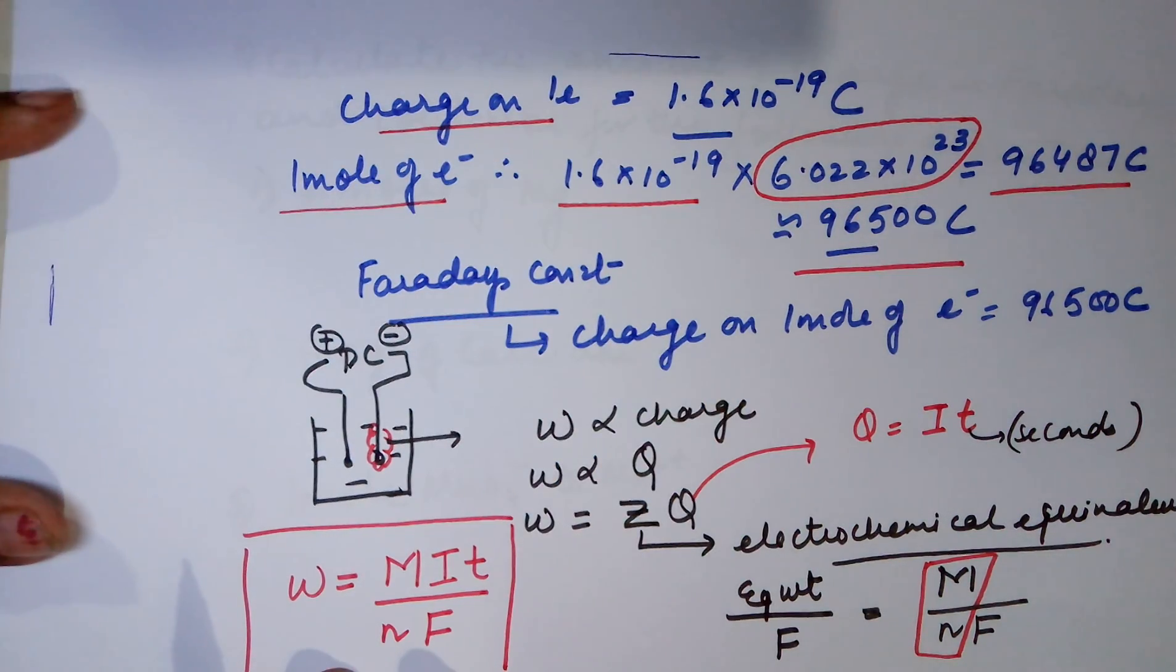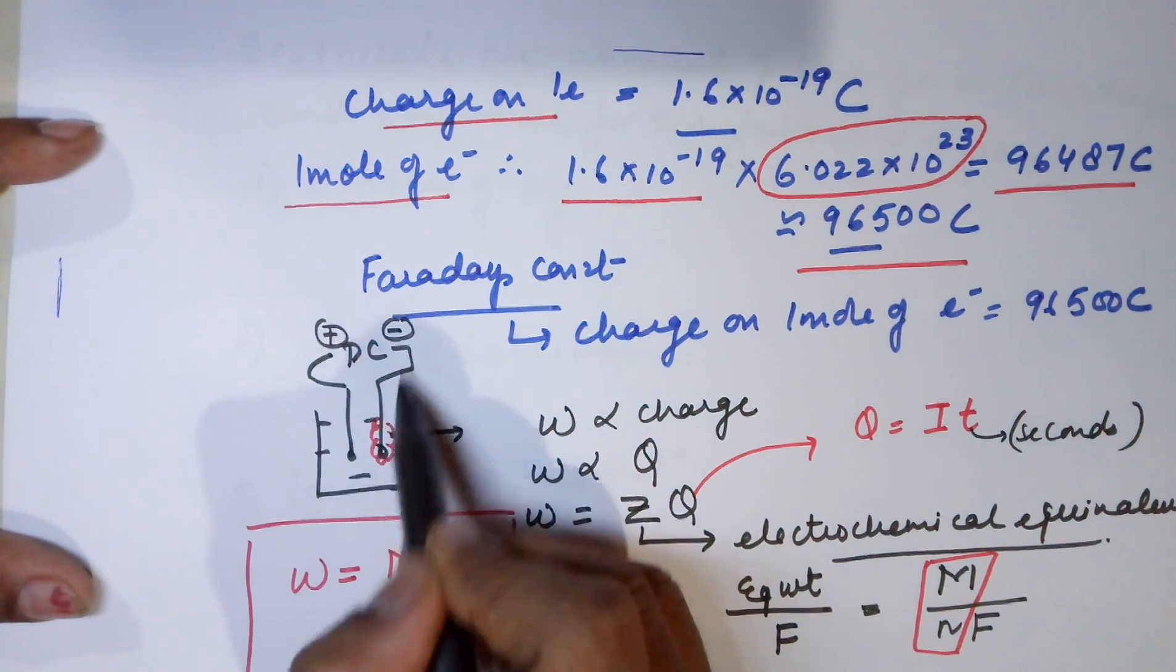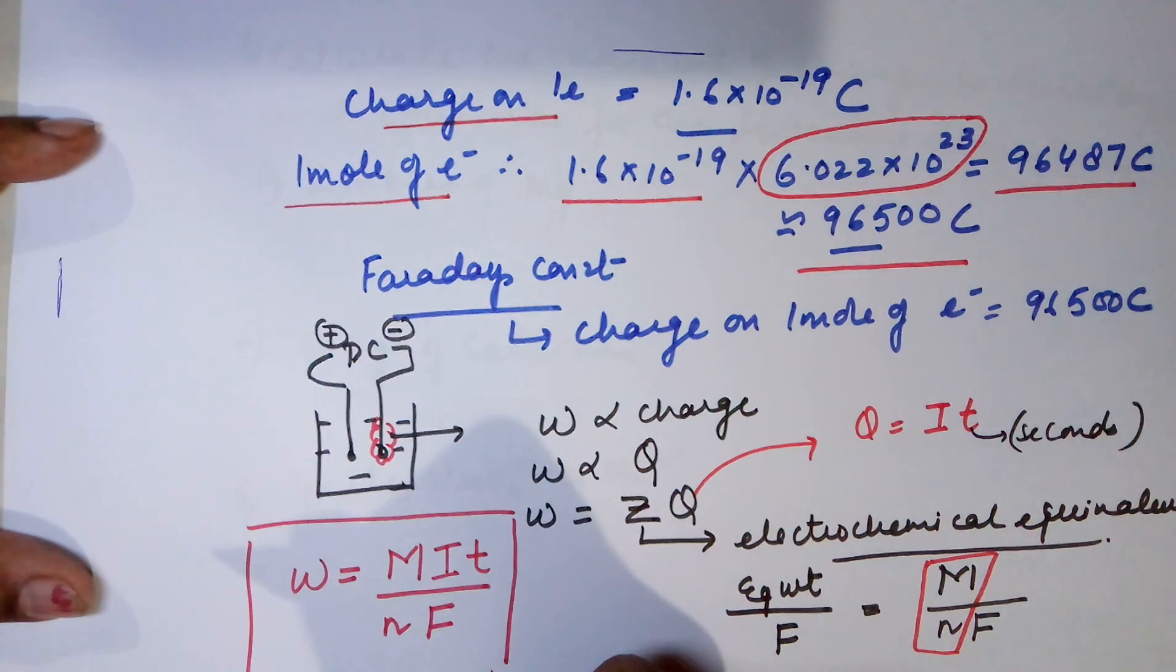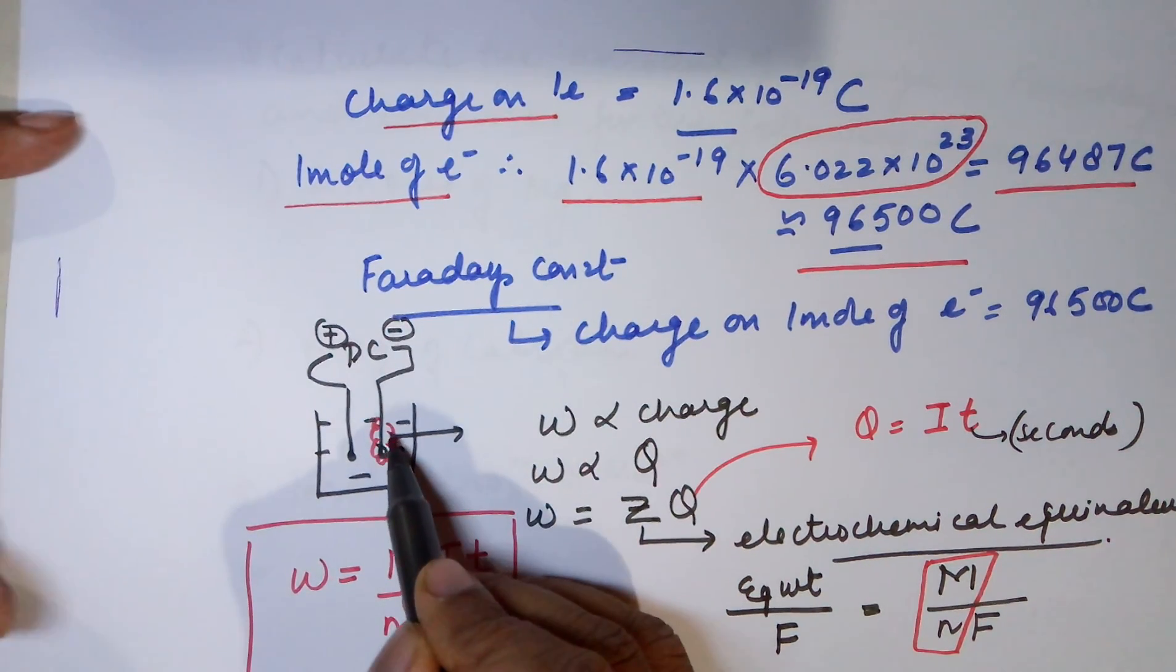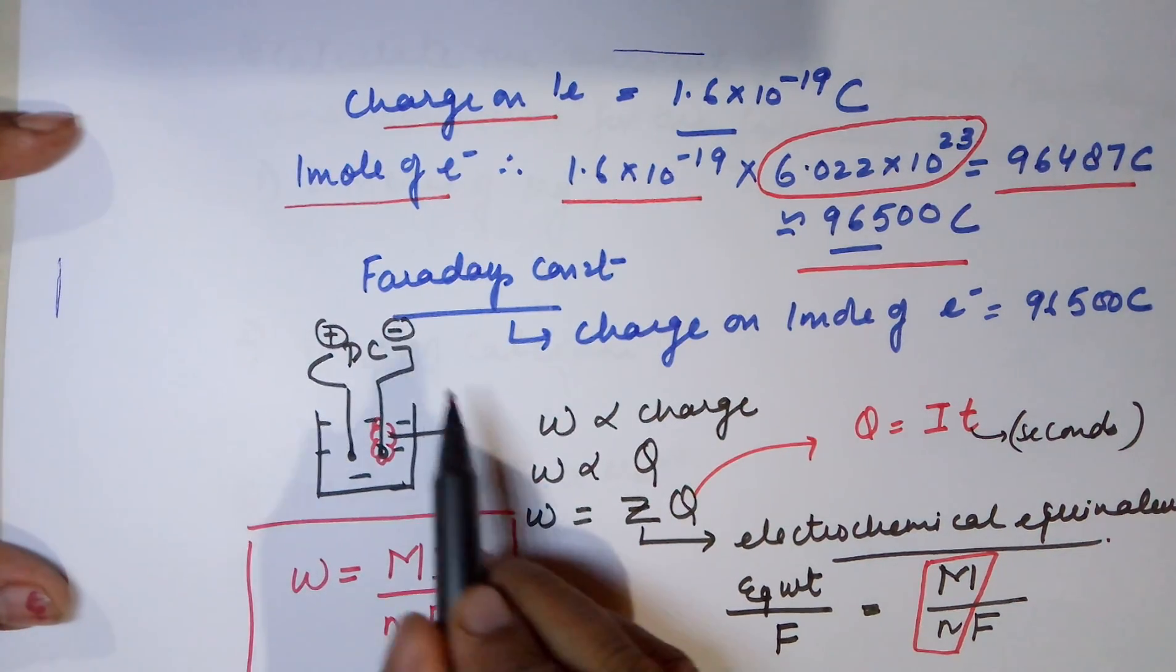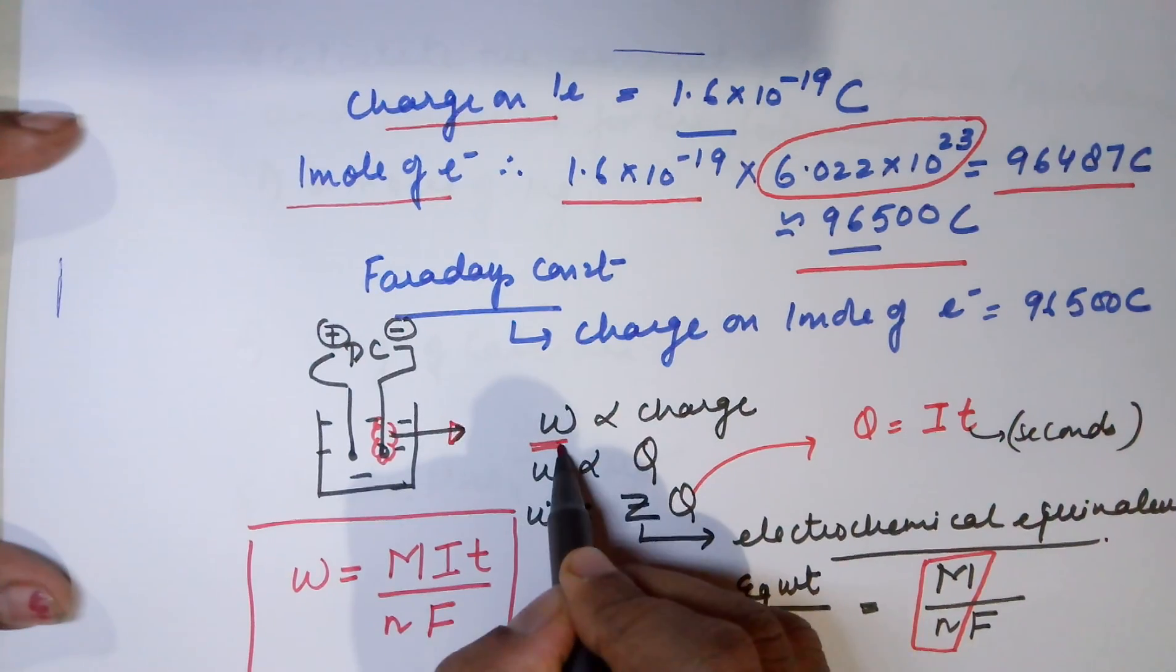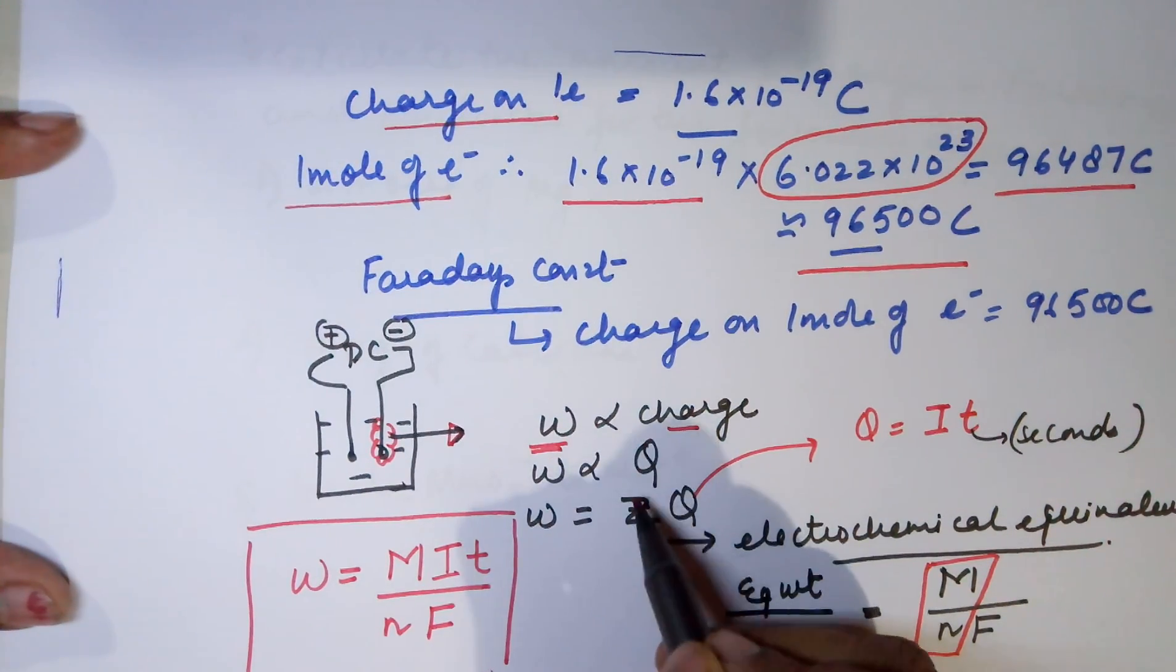During the electrolysis process, current of DC is used through the electrodes into a solution and we have some depositions happening onto the electrodes. On the cathode, we have some depositions and the mass of this deposition can be calculated on the basis of the first law.